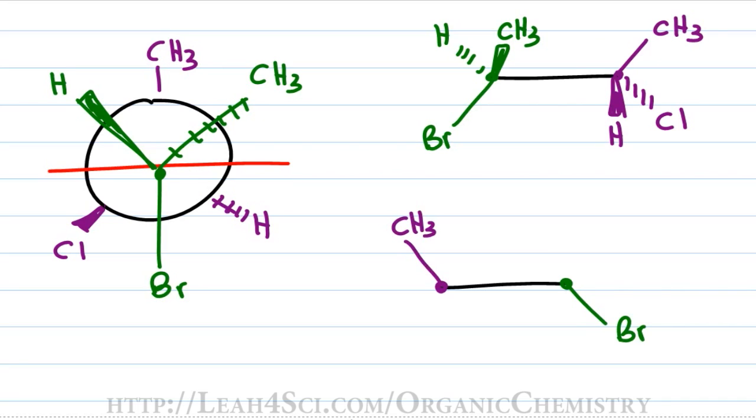Now we use the same trick for dashes and wedges. The green carbon has hydrogen going up on a wedge and methyl going up in dashes and the purple carbon has chlorine coming down on a wedge and hydrogen going down in dashes.